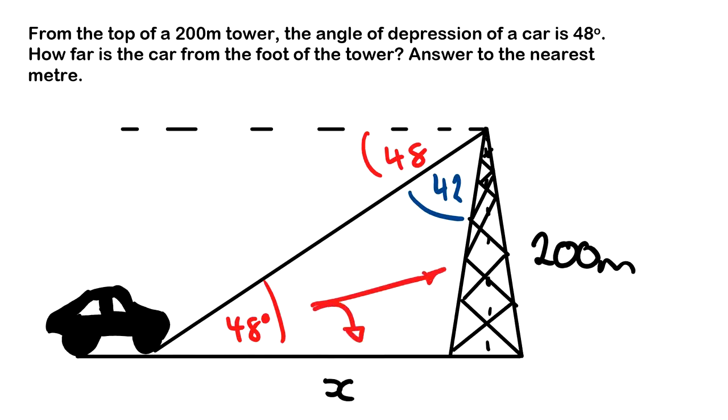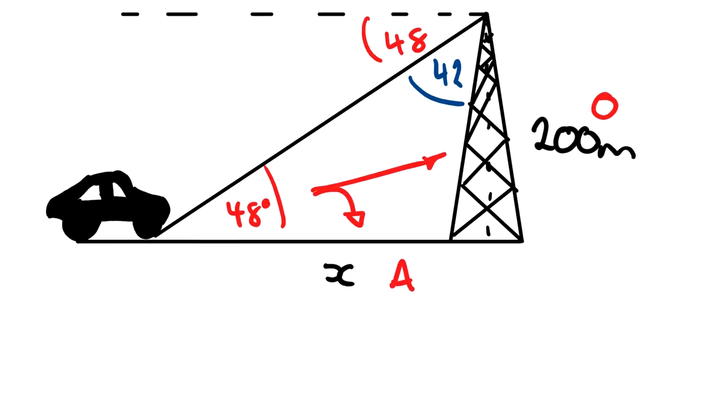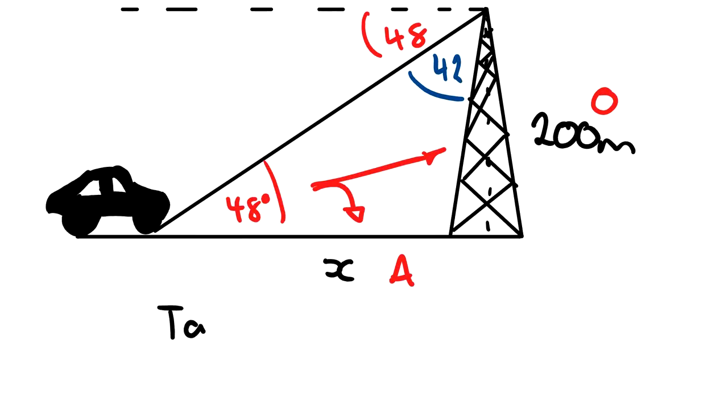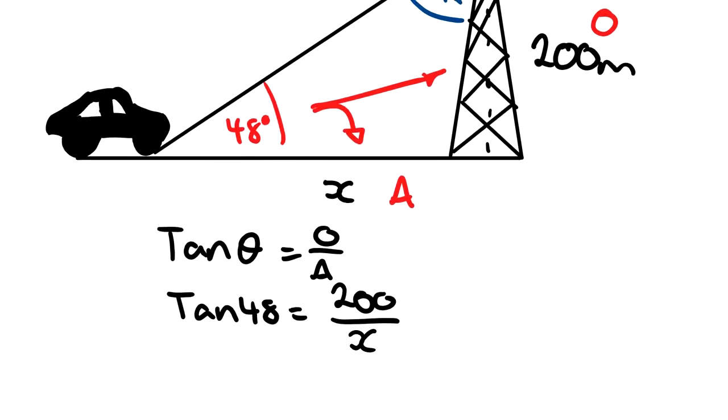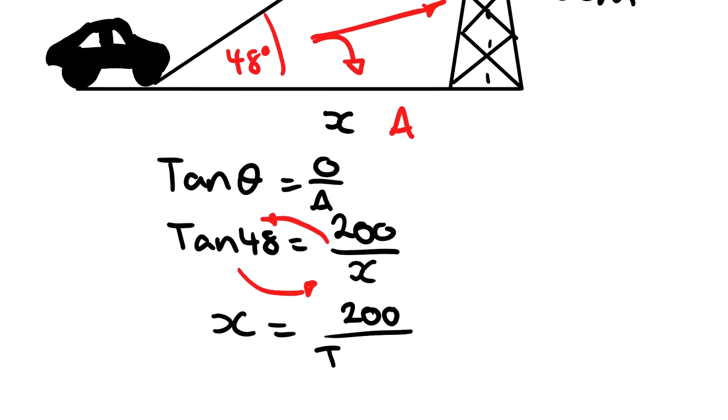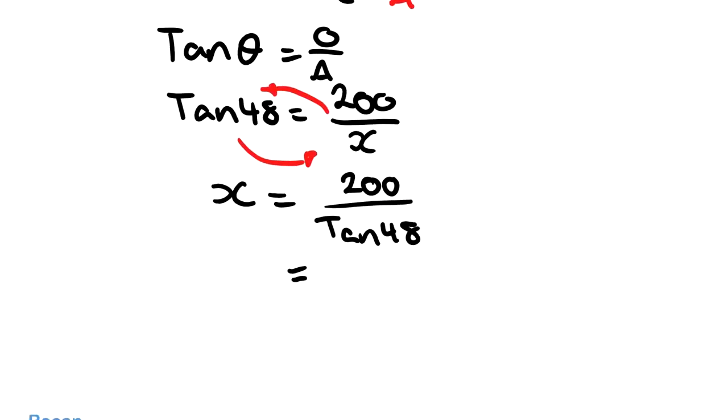Opposite and adjacent, so we're using tan again. Tan θ equals O over A. Tan 48 equals 200 over x. If you remember, if your unknown is on the bottom, we can use the trick and just swap these positions. So we get x equals 200 over tan 48, which you can put straight into the calculator and get 180 meters.